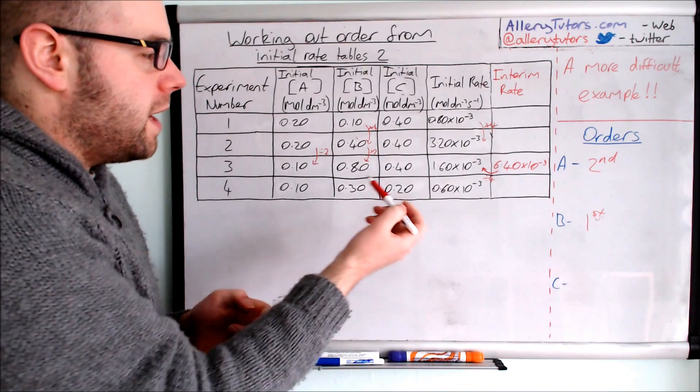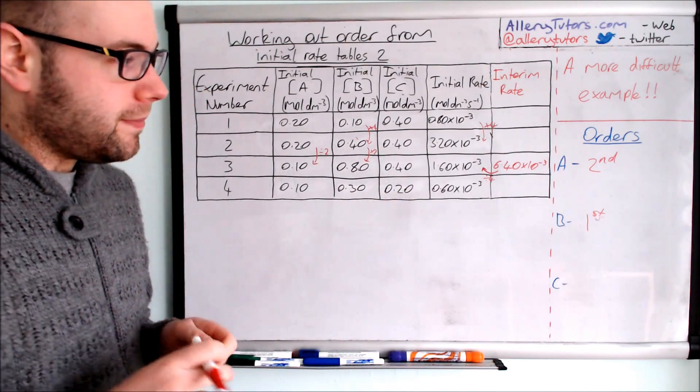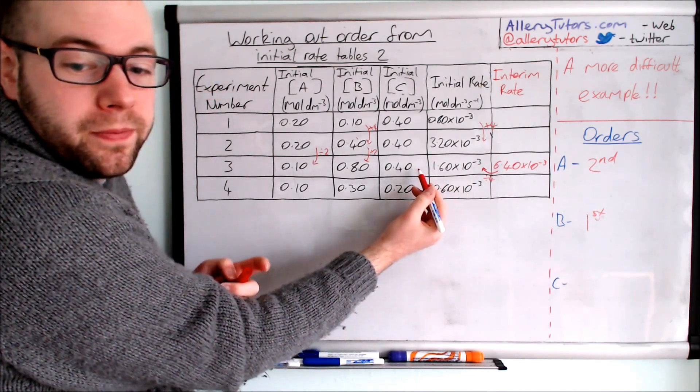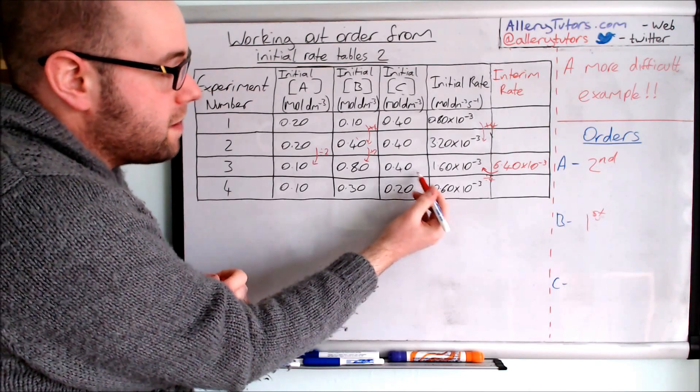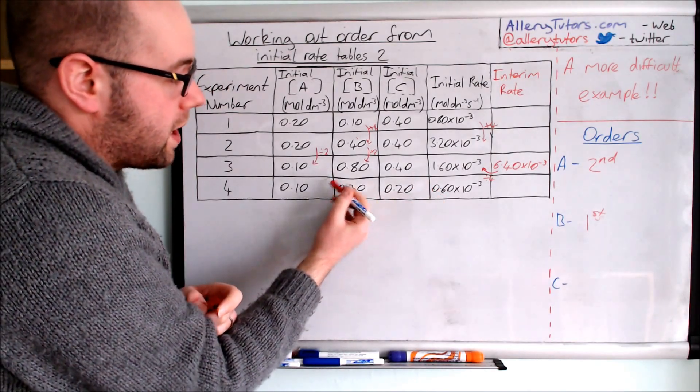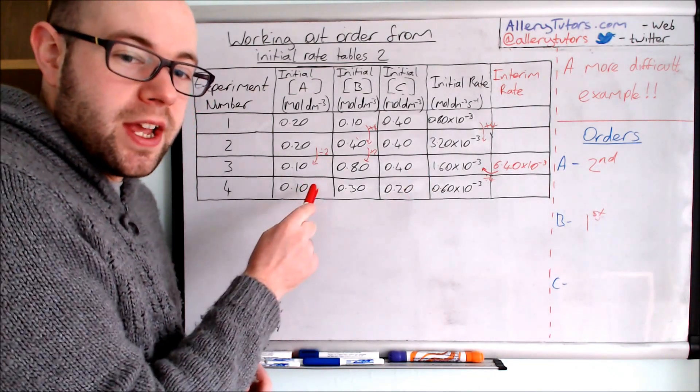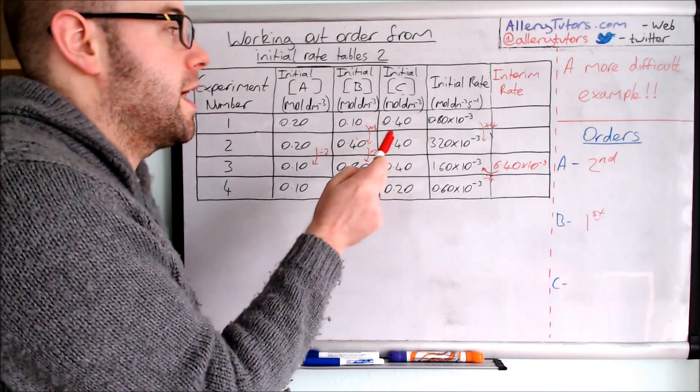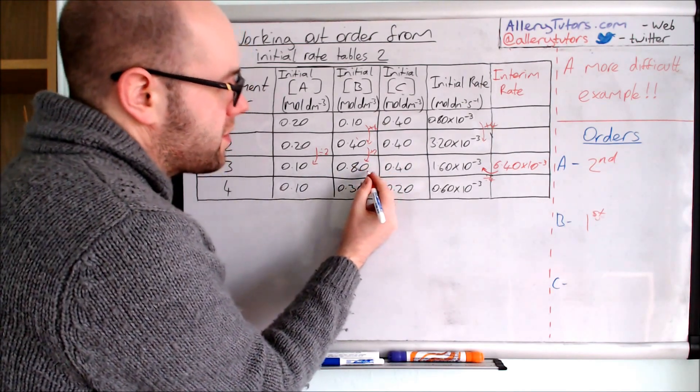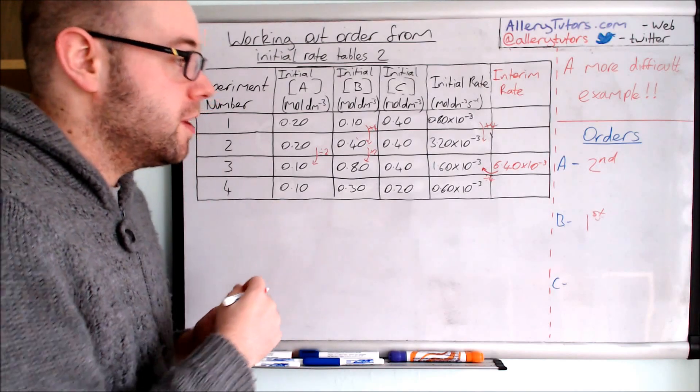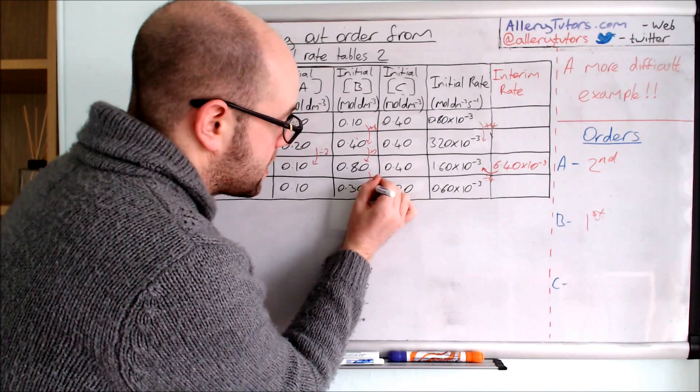We're looking for a change in C. You can see we have a change here going from 0.4 to 0.20. We're looking for no changes in other reagents. We have no change here for A, so that's pretty good, and we have a change for C, which is what we need. But importantly we have a change with B, which is quite annoying because it's changing, but it's not a problem because we know the order for B.